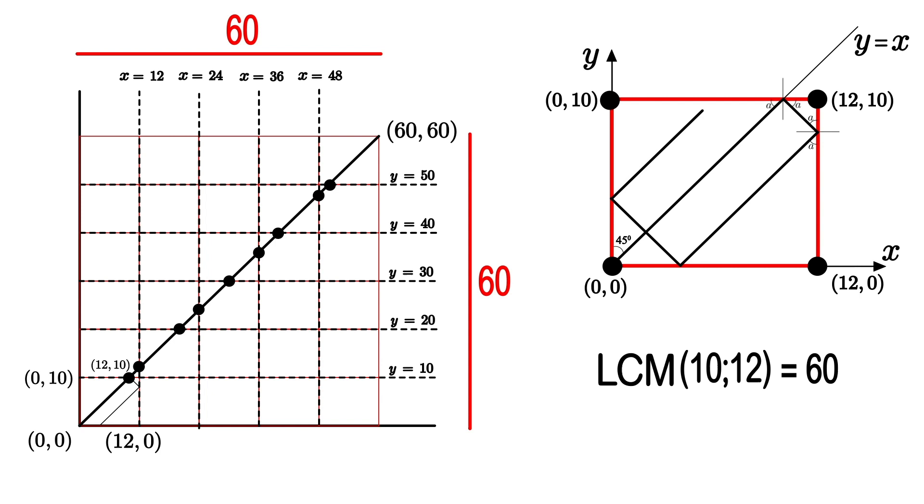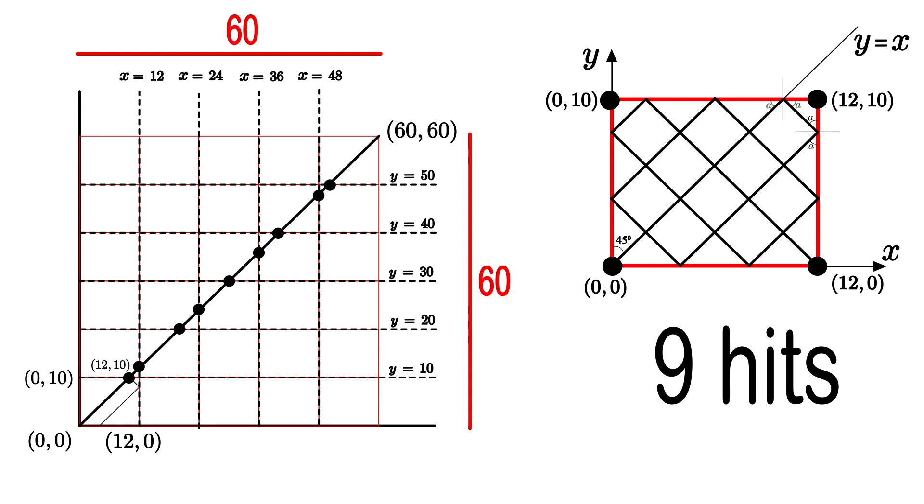Now if we draw all reflections, we will notice that there are 9 hits to sides before reaching first time any corners. So this is the solution.